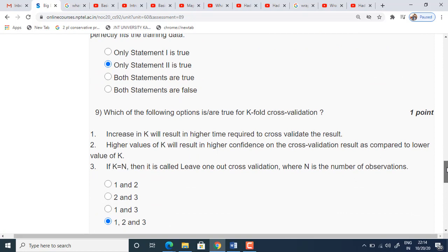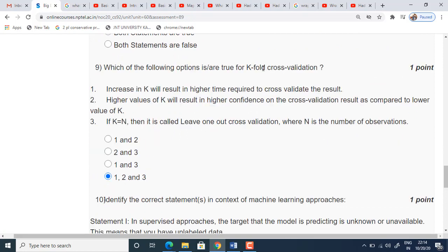Coming to ninth question. Which of the following options are true for K-fold cross-validation? If you observe, all the statements are true actually. Increase in K will result in higher time. If you go on increasing the K value, it takes a lot of time to get the result. Higher values of K will result in higher confidence, that is also true. If K is equals to N, N is a number of observations here, it is called leave one out cross-validation. So it is a basic question they have asked. So the answer is one, two, three. All the three statements are true.